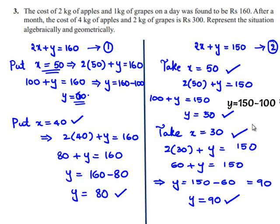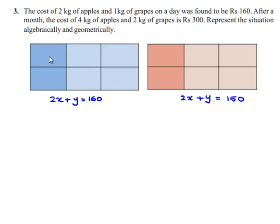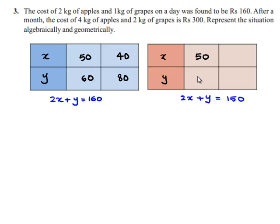Let us tabulate these values in a tabular form. For the equation 2x + y = 160: if x = 50, y = 60; and if x = 40, y = 80. For the equation 2x + y = 150: if x = 50, y = 50; and if x = 30, y = 90. Let us use these tabular values to plot a graph.